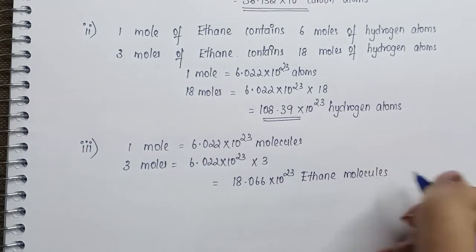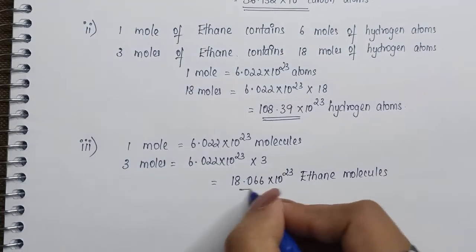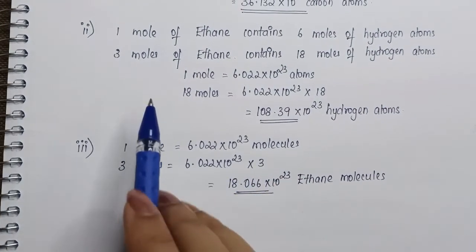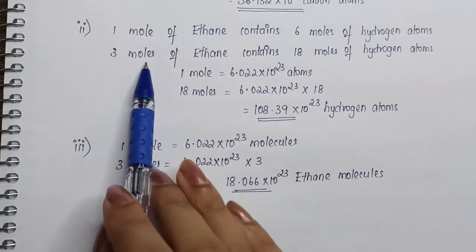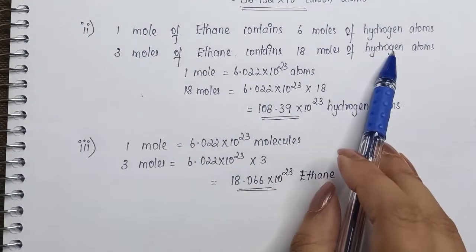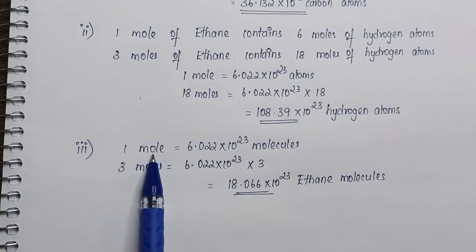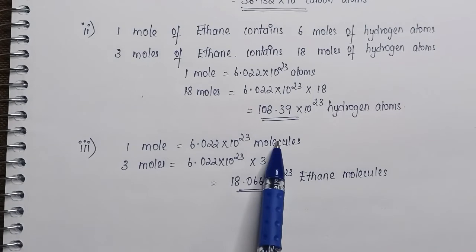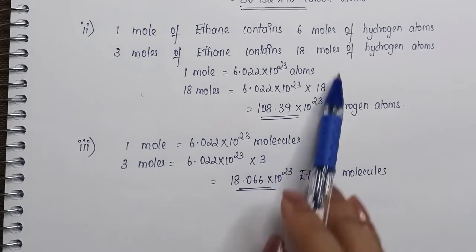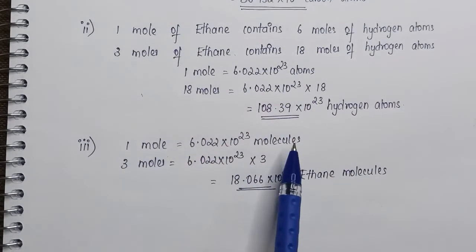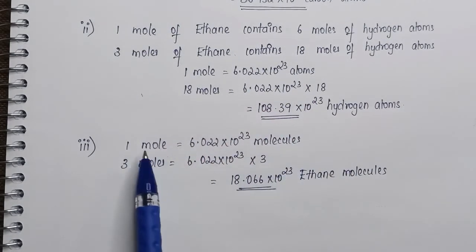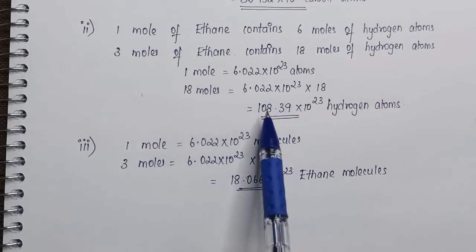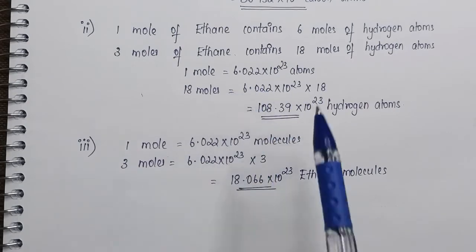This problem basically shows the relation between mole and atom, and tries to find the relation between mole and molecule. This way it is easier to calculate once you know this relation thoroughly.